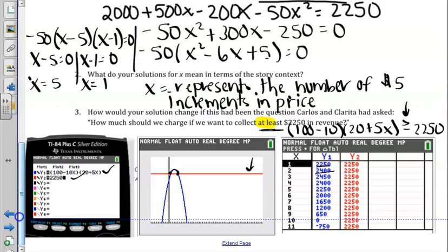When x is 2, we would make $2,400. So we would make more than or at least $2,250. And if we look at all of these values, when x is 1 through x is 5, we can see that all of those y values do give us a value that is at least $2,250 or more.